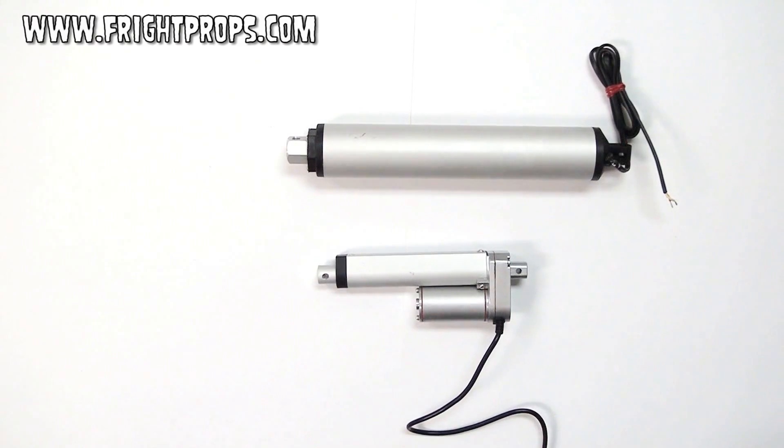What is an actuator? They're basically a motorized device that pushes a rod or shaft in and out. You can see this actuator here moving the shaft in and out.